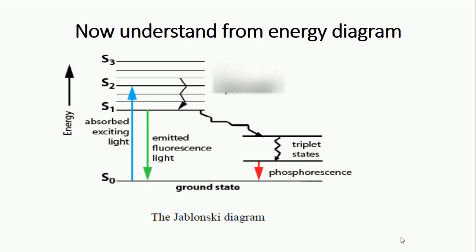If the electron comes back to the ground state from that singlet excited state, then this is fluorescence. If the electron is coming through a triplet state, that is, if the transition is from triplet state to singlet state, then this phenomenon is called phosphorescence.